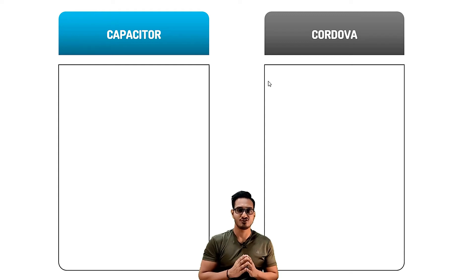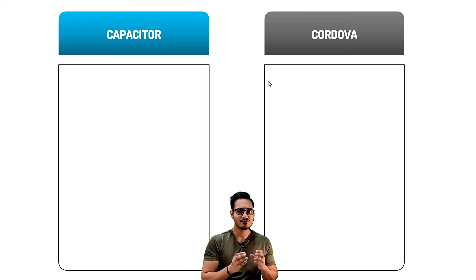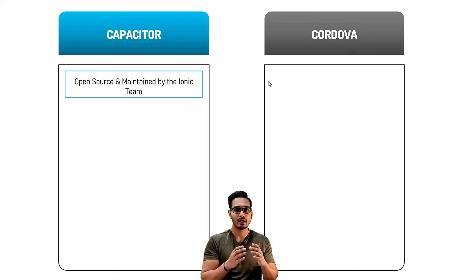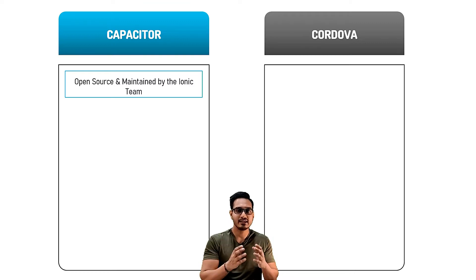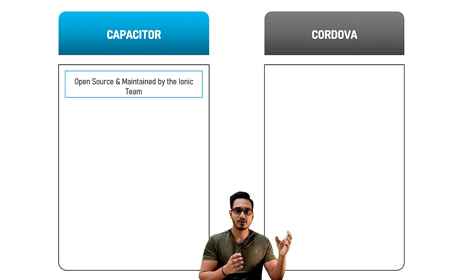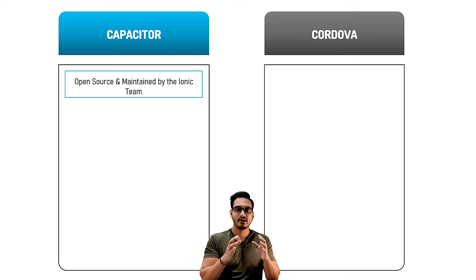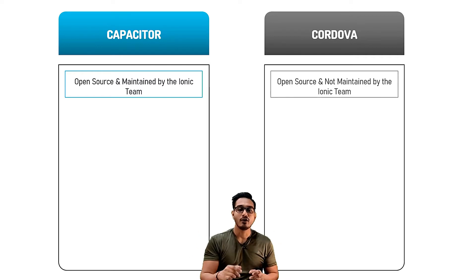Welcome to this lecture. We are going to see what is the difference between Capacitor and Cordova. Capacitor is open source and it is maintained by the Ionic team itself, which gives the benefit of having everything in one universe of Ionic. We have the Ionic framework and the bridge to connect it with mobile applications all in one place.